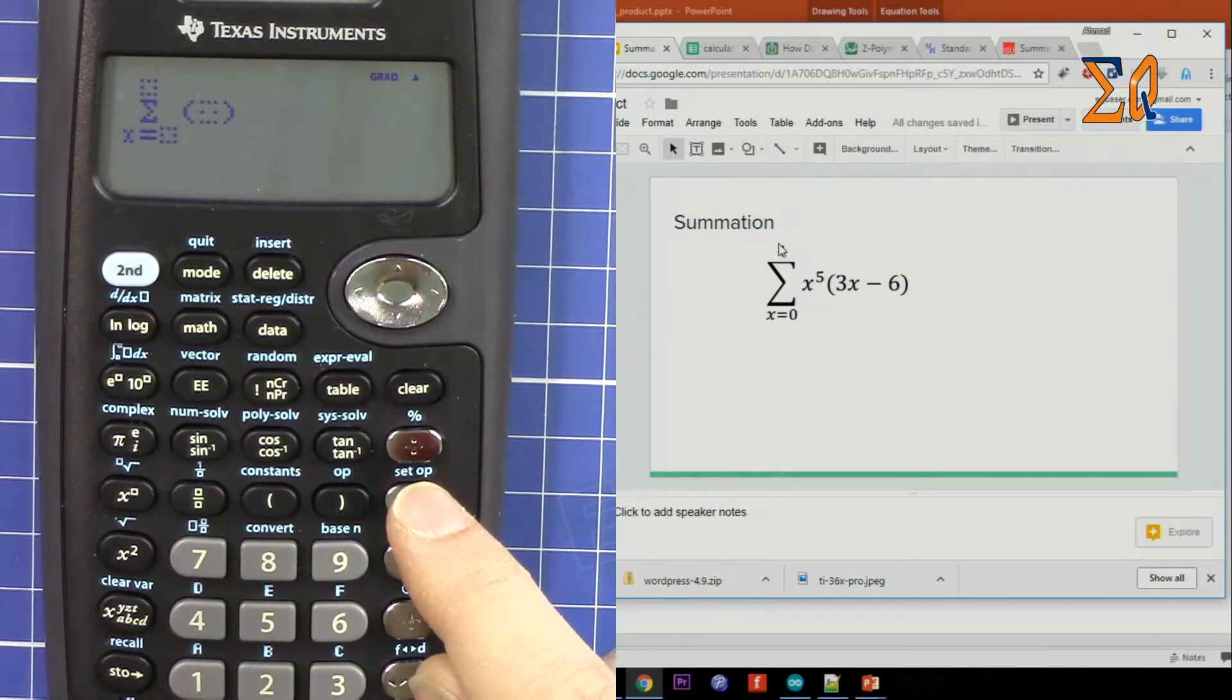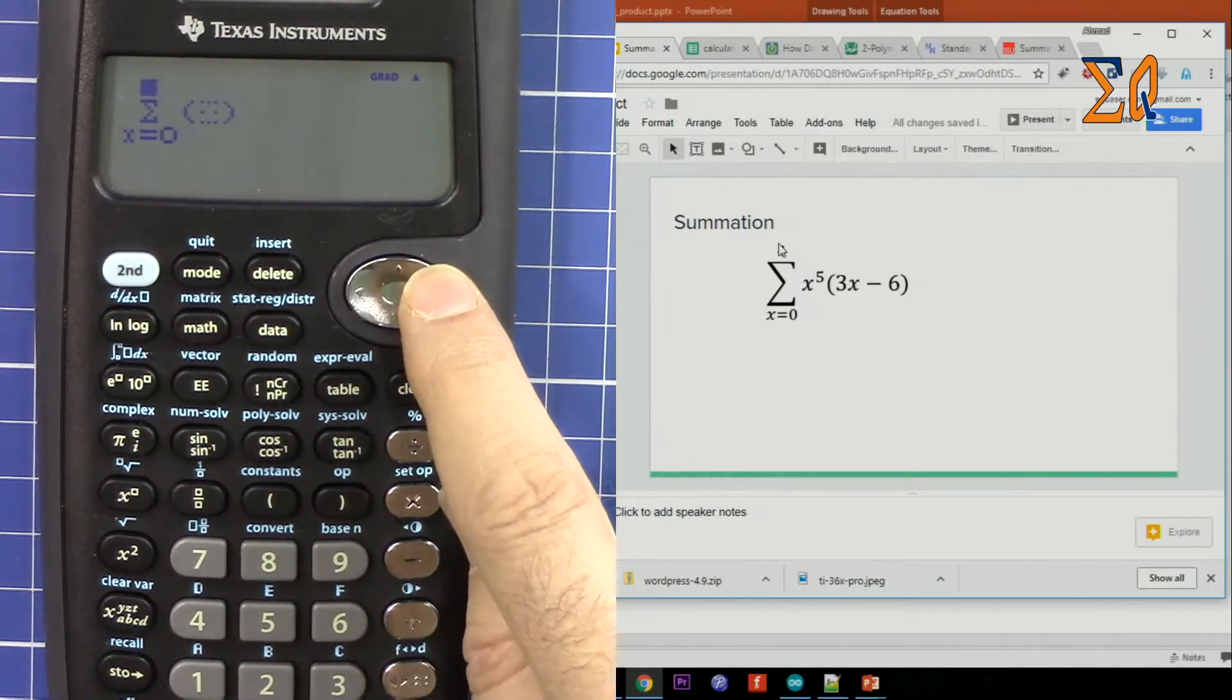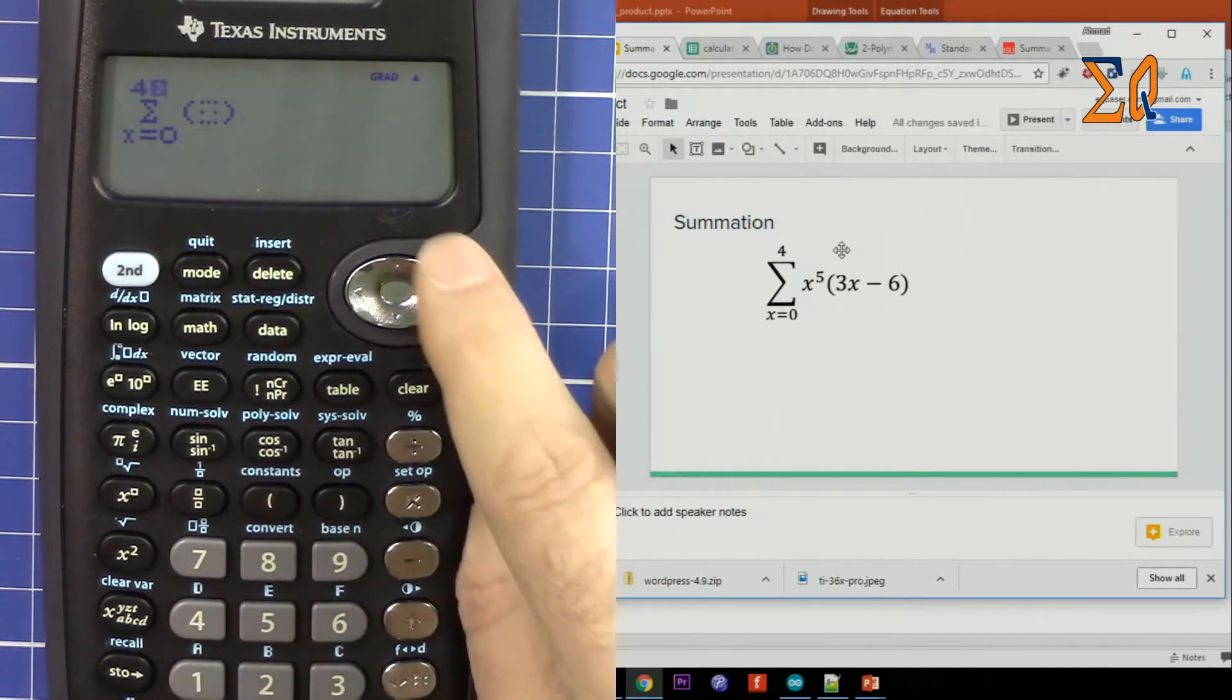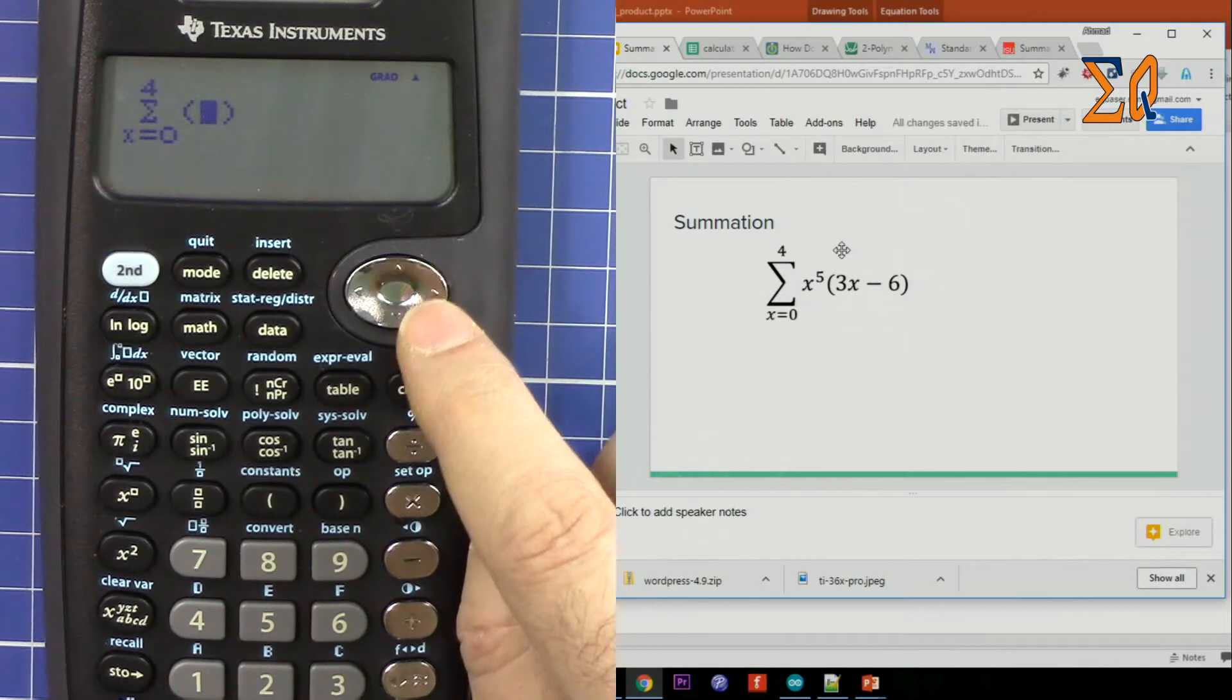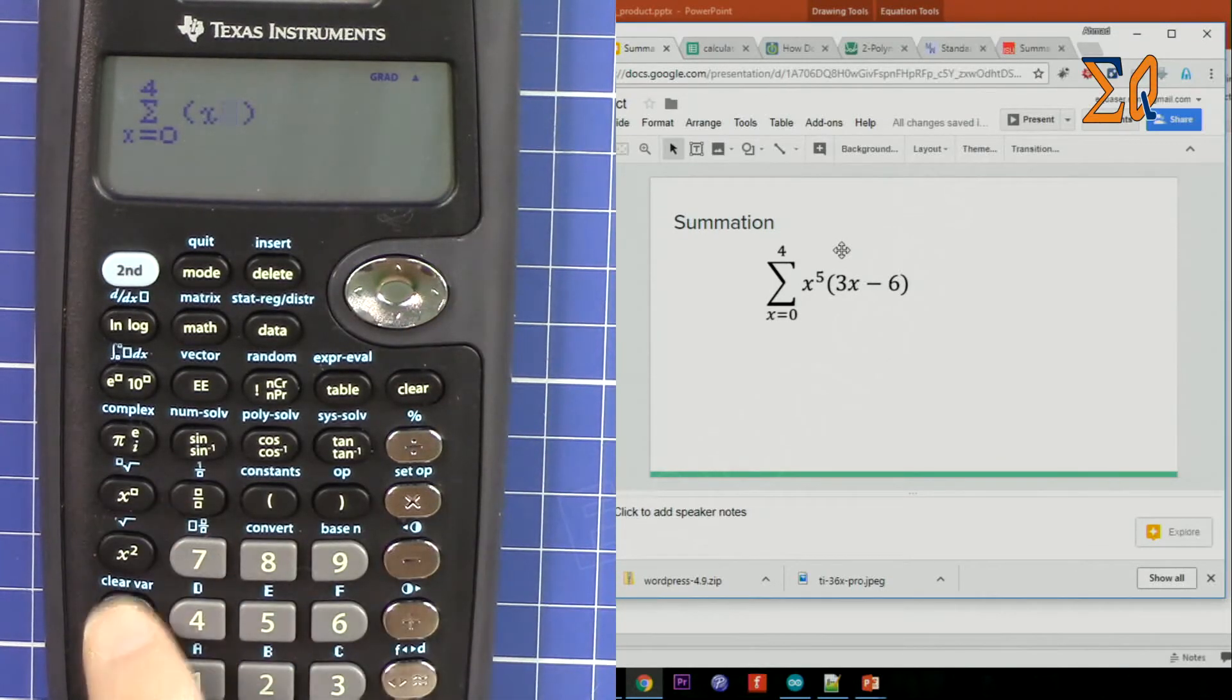The summation sign appears. So x equals 0. With the arrow, go to the right, it goes to the top. Now we have 4, we want from 0 to 4. Then now x, press this button for x.